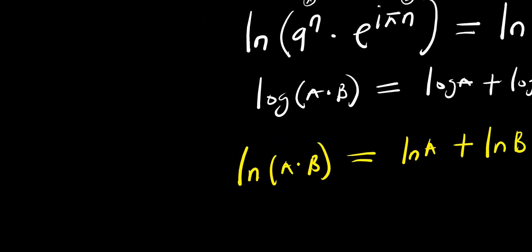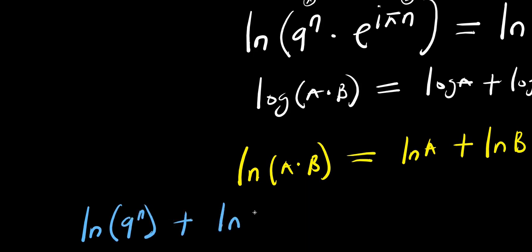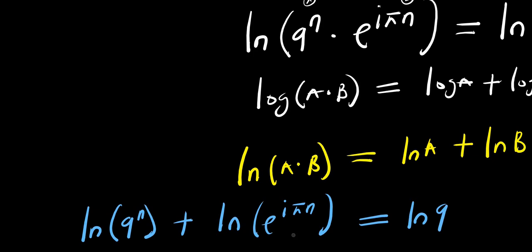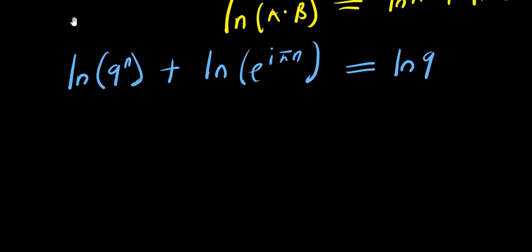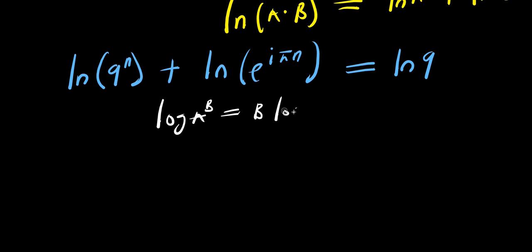That means we have natural log of 9 power n plus natural log of e power i times pi times n equals natural log of 9. And if you have log a power b, it equals b times log a.